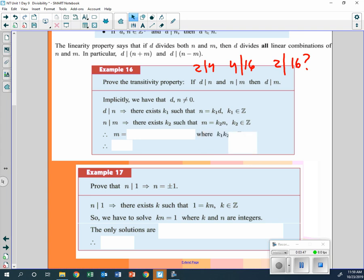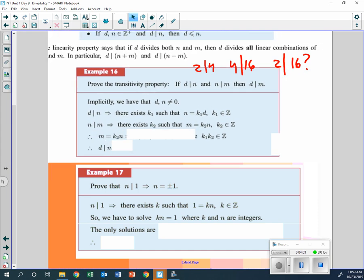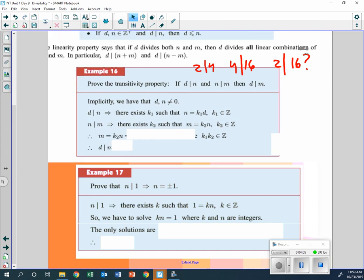So now, what if we say d divides m, then m here is going to be equal to k2 times n, but n was also equal to k1 times d. So what we would do is we would put this in here, and we would say m is equal to k2 times n, or k2 times k1 times d.